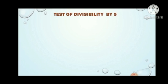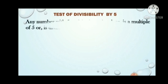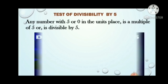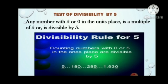Test of divisibility by 5. Any number with 5 or 0 in the unit's place is a multiple of 5 or is divisible by 5. Now here we have to see 0 or 5 in the unit's place. If 0 or 5 is in the unit's place, then the number is divisible by 5. Examples: 180, 285, 1930, and so on.